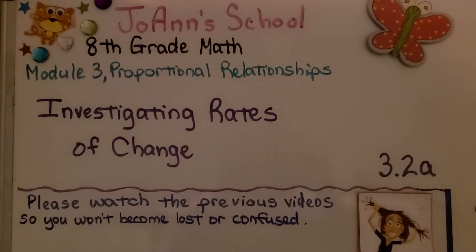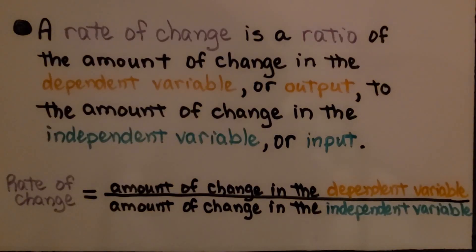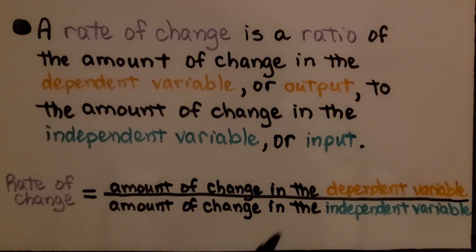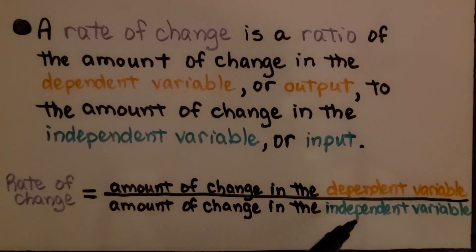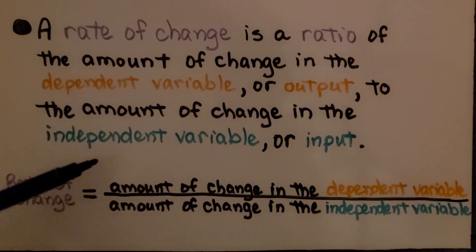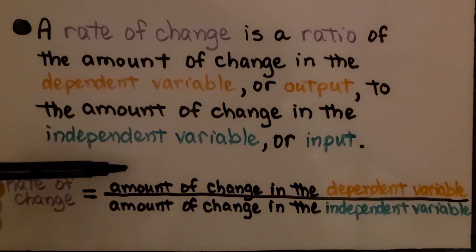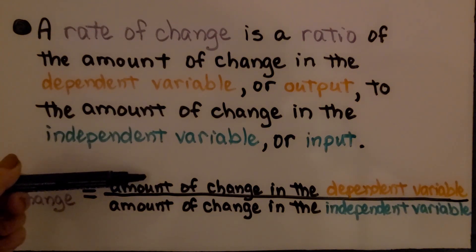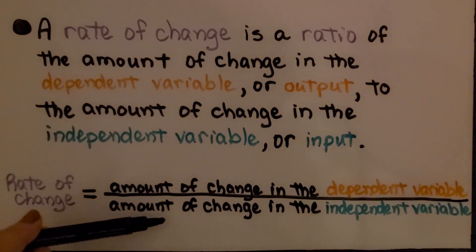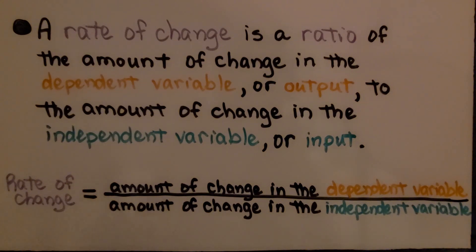Investigating Rates of Change, Lesson 3.2a. A rate of change is a ratio of the amount of change in the dependent variable, or output, to the amount of change in the independent variable, or input. So for the rate of change, we have the amount of change in the dependent variable over the amount of change in the independent variable.